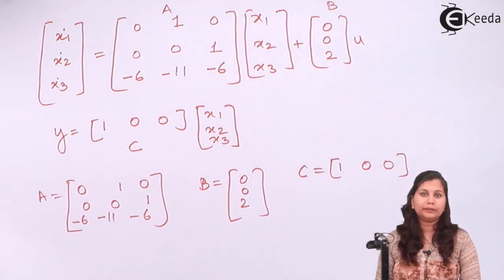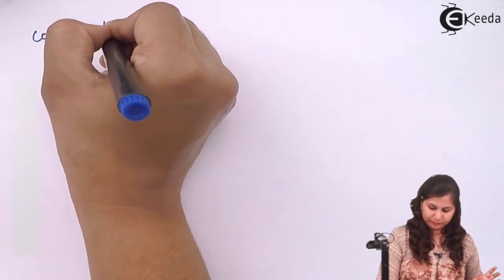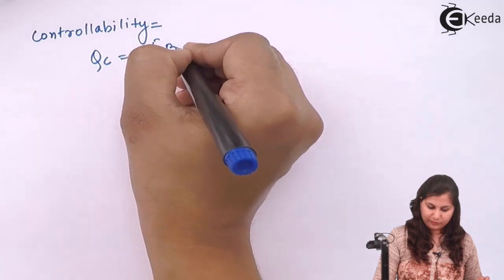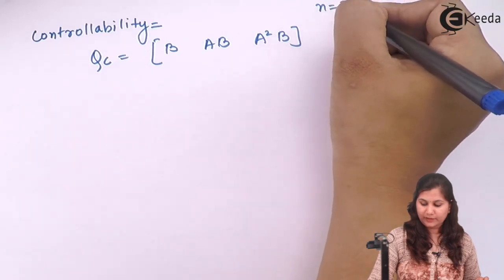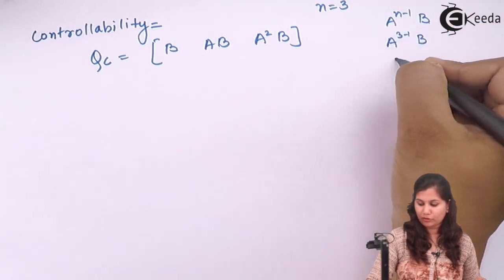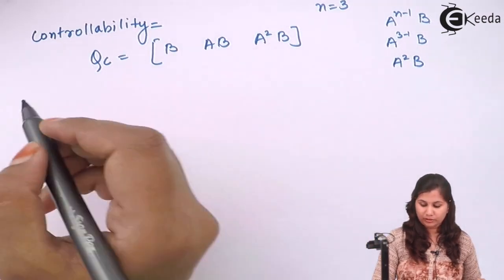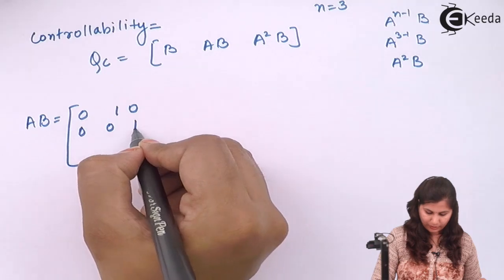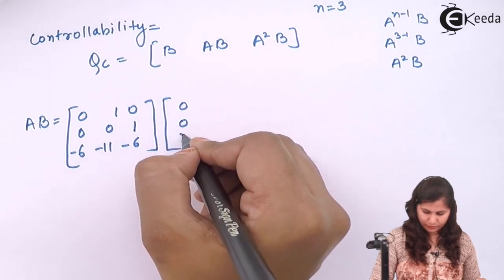Now we check controllability. For controllability we determine QC = [B, AB, A²B], since there are three state variables (n=3), so we go up to A^(n−1)B = A²B. B is already known as [0, 0, 2]^T. To calculate AB: A × B = [[0,1,0],[0,0,1],[−6,−11,−6]] × [0, 0, 2]^T.